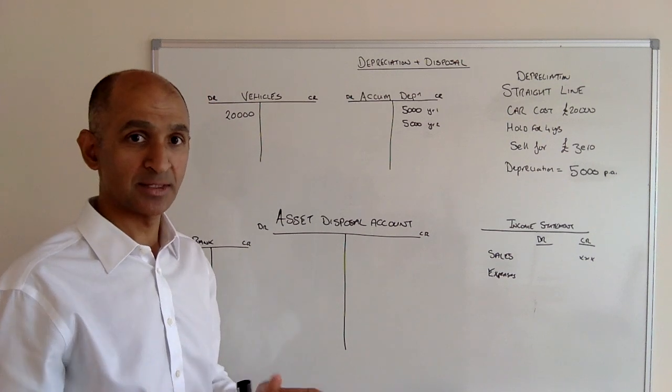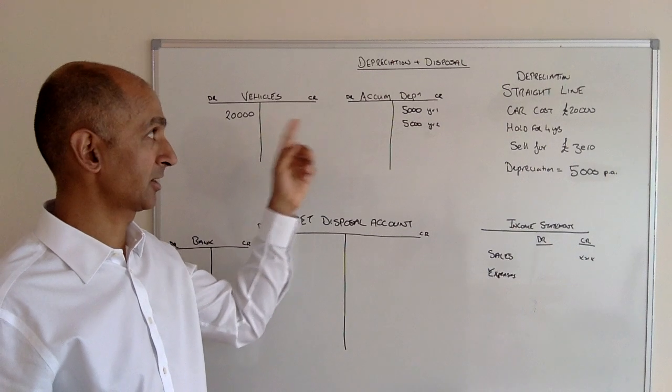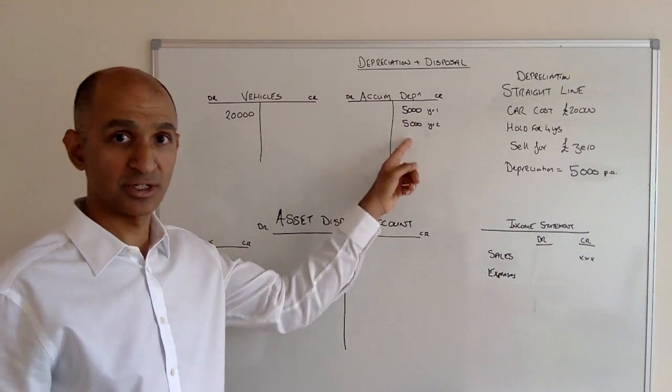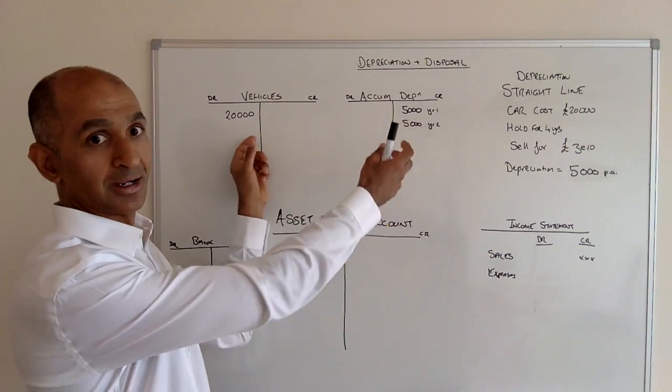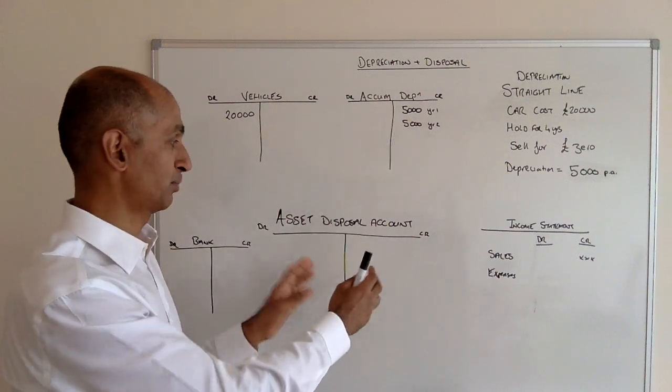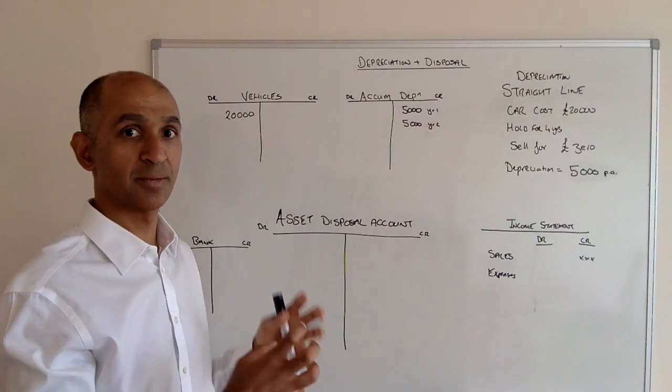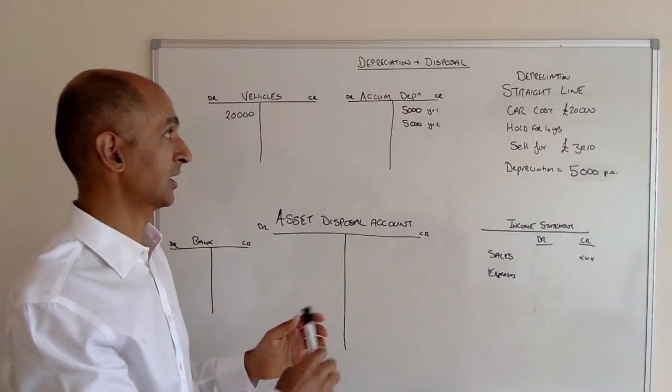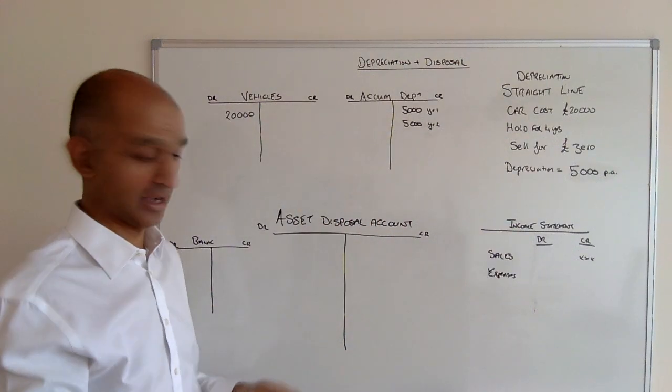What actually happens then is the asset that's in the assets account and its relevant depreciation from the accumulated depreciation account—both of those are sucked out of those accounts and put together in an asset disposal account. For the first time, they're going to be combined into one ledger account. Previously, they were in an asset account and a contra-asset account.